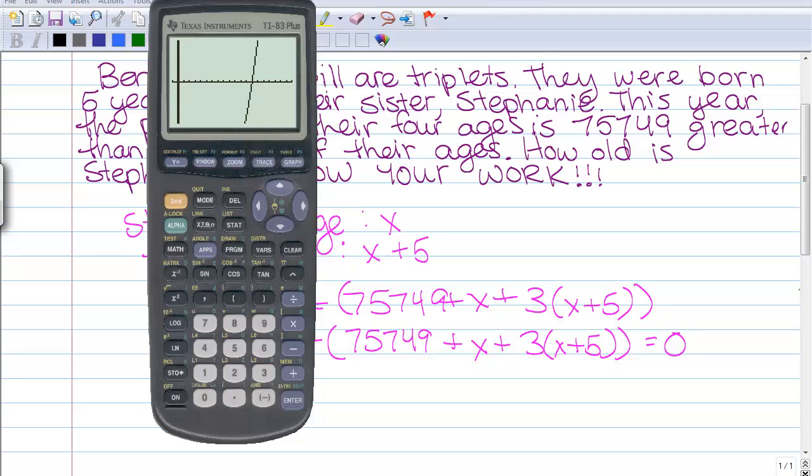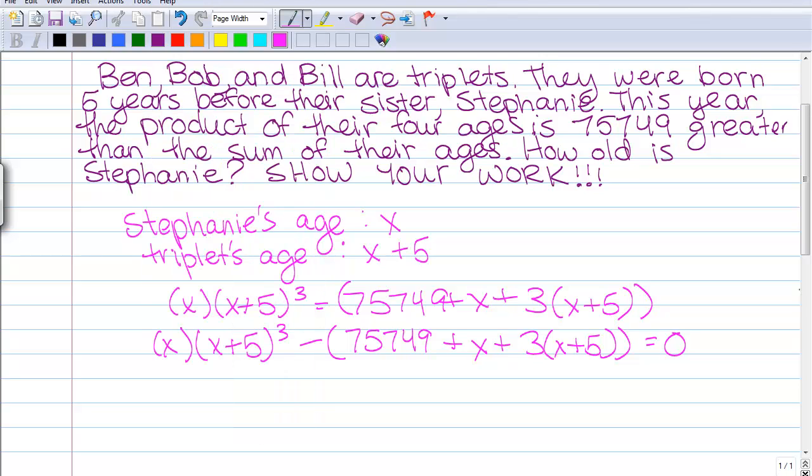And now we have to find the zero of X. And this tells us that the zero of X equals 13, which means Stephanie's age is 13 and the triplets are 18.